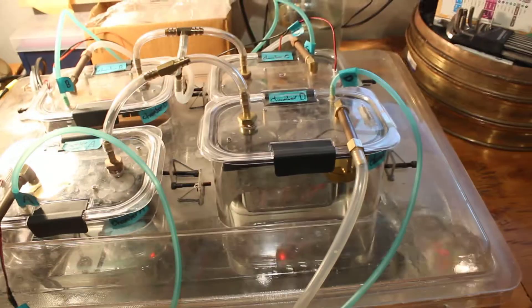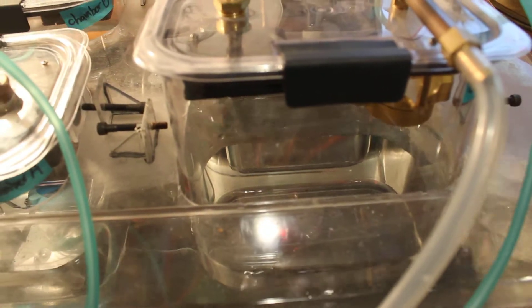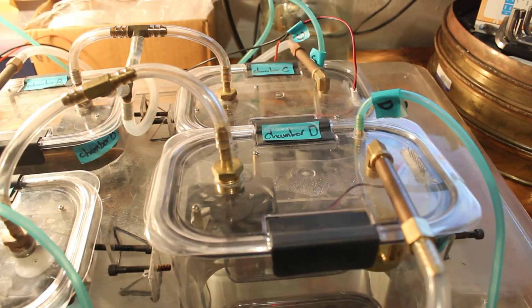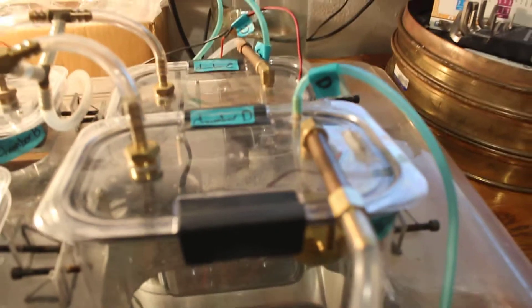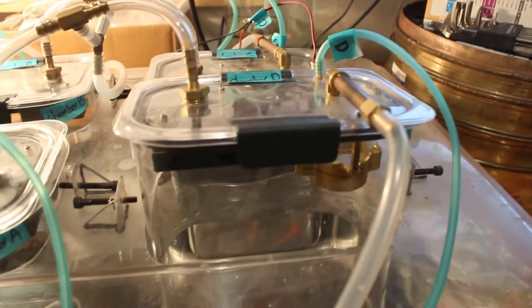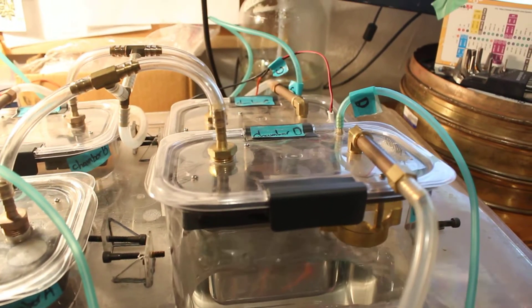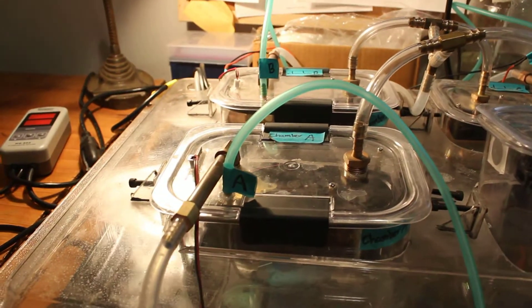And in these chambers are the soil samples and air is constantly being circulated through each chamber. And you see those green lines, that's the sample line for the CO2.